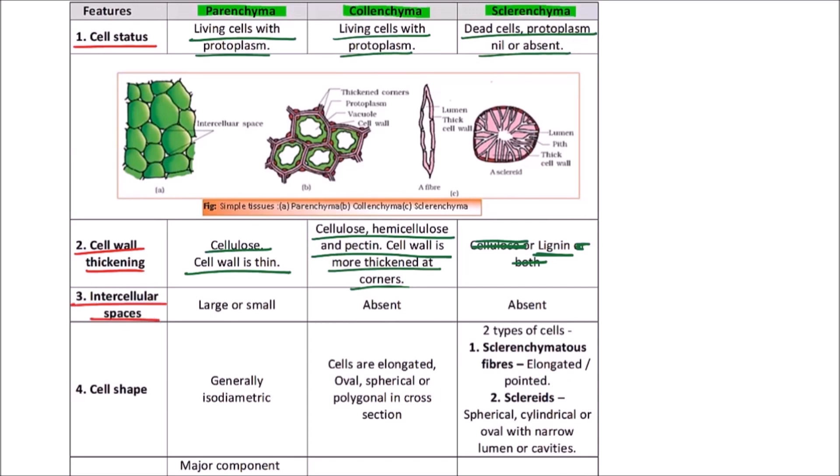Intercellular spaces: these are large or small depending on the type of parenchyma, absent in collenchyma, and these are also absent in sclerenchyma.